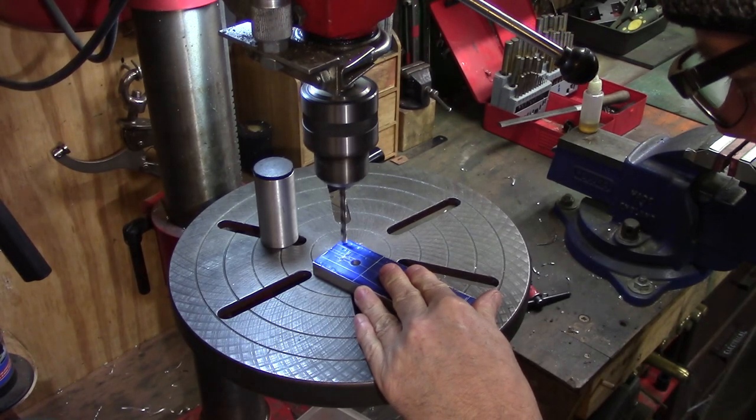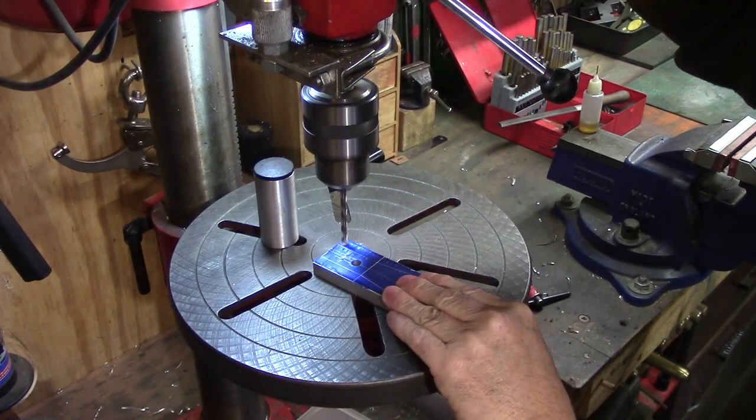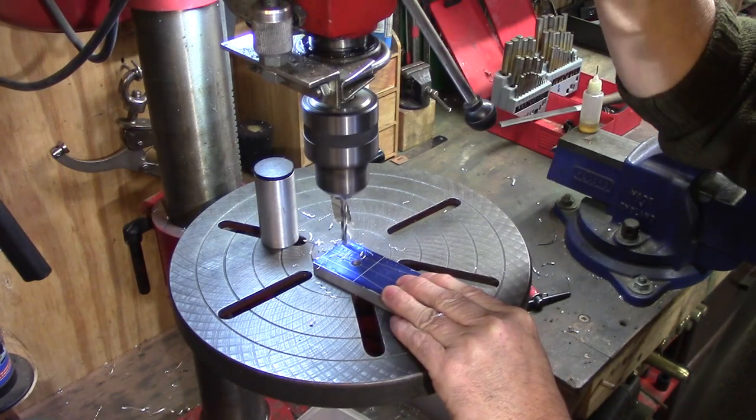A 5mm drill was used to chain drill multiple holes, positioned just outside the scribe lines.